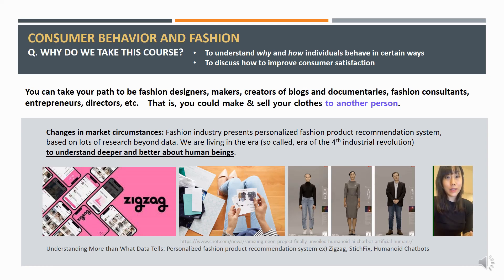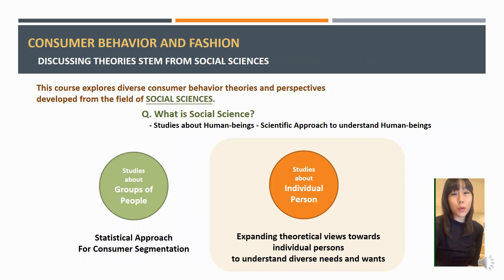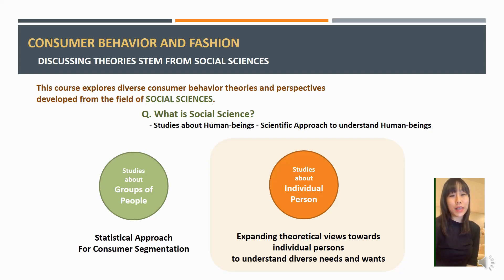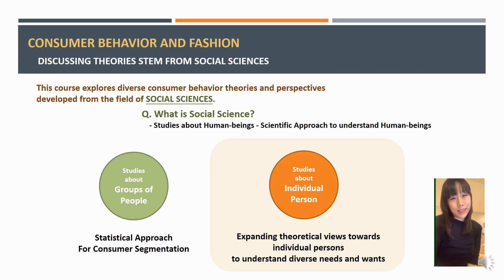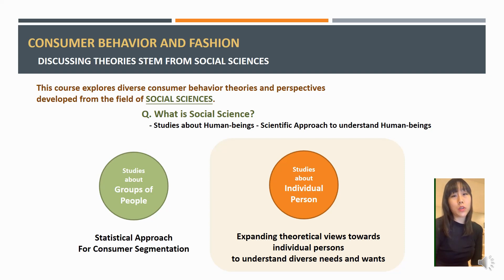This course is about knowing your consumer, how they behave, and how they make decisions. It is basically a humanities course talking about human beings, but many of the theories we'll discuss came from social sciences — the study of human beings and society — including sociology, psychology, anthropology, statistics, and economics. This is a scientific study to understand human beings.